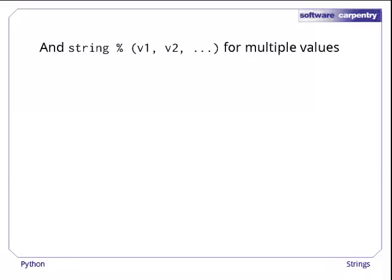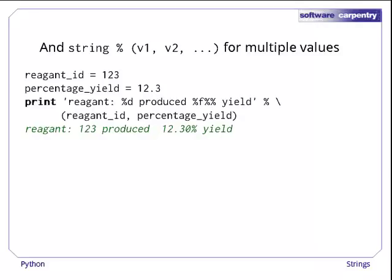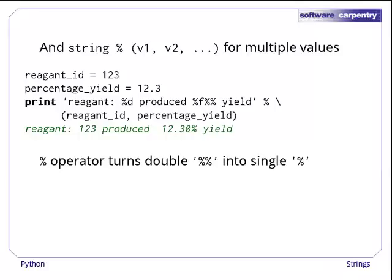If we want to format multiple values at once, we have to put them in parentheses after the percent. Here's our earlier example redone with string formatting. We have used %d to format an integer, %f to format a floating point number, and %% to format an actual percentage sign. We have to do this because when Python applies % to a string, it expects something after every actual percentage sign in that string. We'll come back to this idea in a few moments.